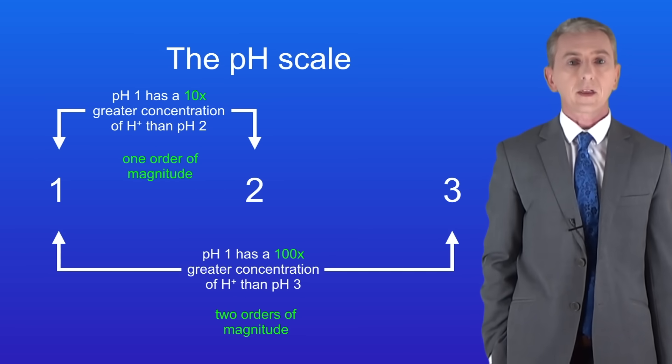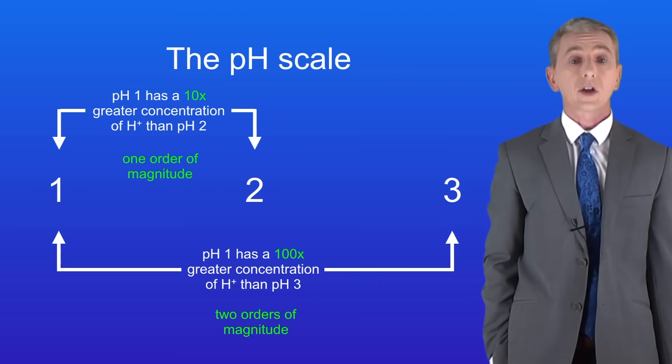So as we've seen, the strength of an acid affects its pH. The pH can also be affected by the concentration of the acid. So we're going to look at that now.